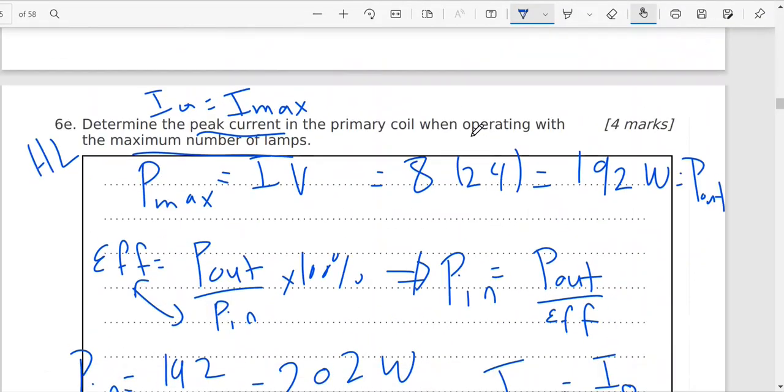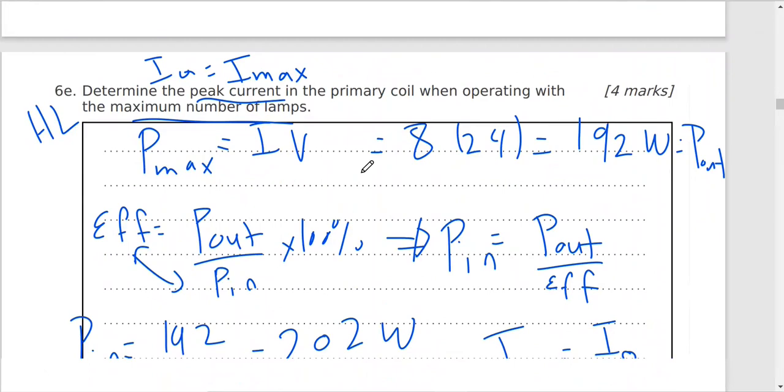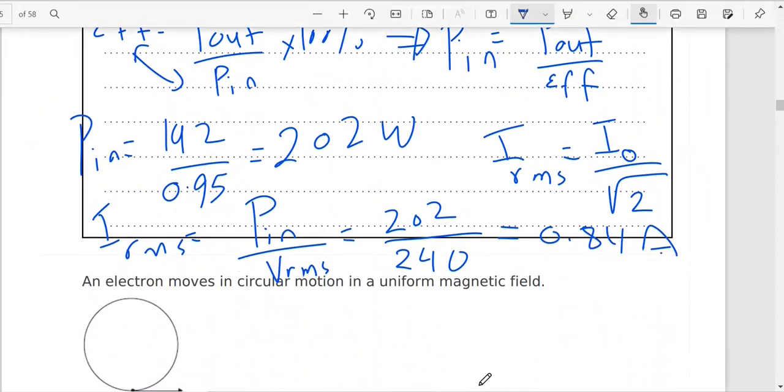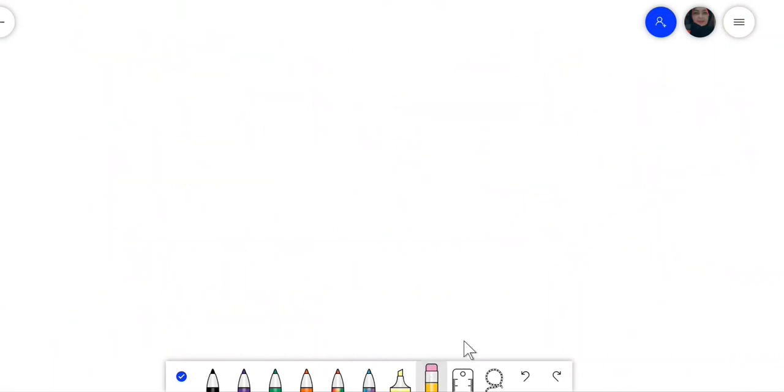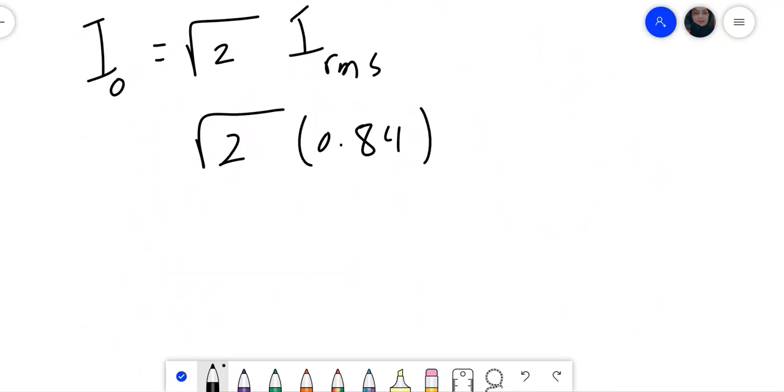In the question you want me to find the peak current. I have I RMS so I can find the peak current. I maximum, I maximum or I peak, I naught or I maximum, will equal square root of 2 times I RMS. So square root of 2 times 0.84, and this will be 1.2 amps.